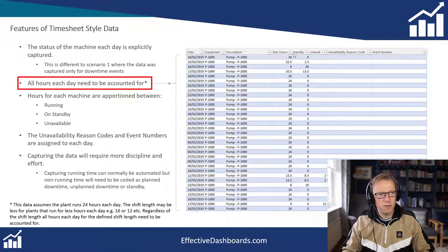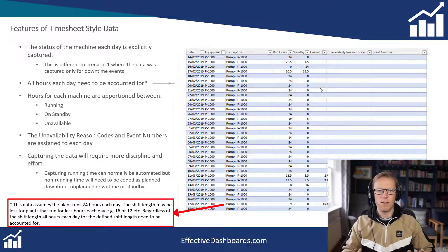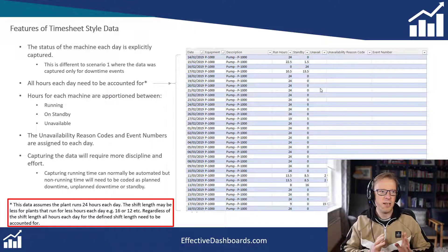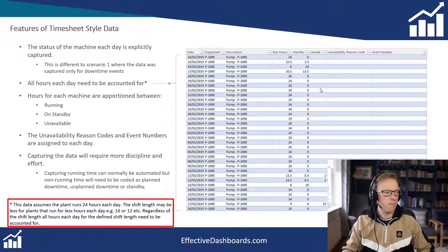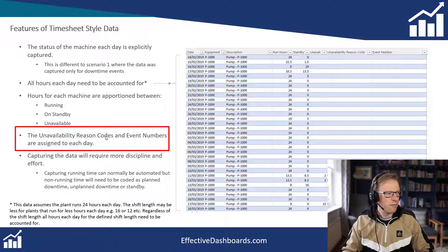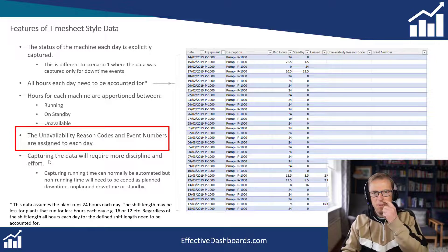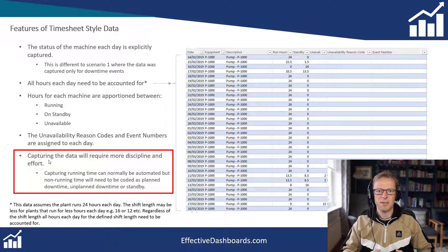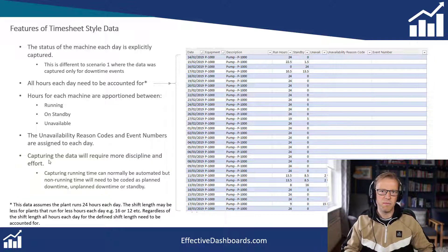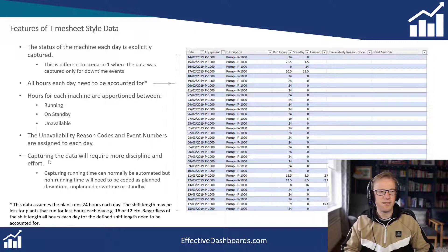All the hours need to be accounted for. In this example it's 24 hours, but it may be that your working duration is only 12 or 16 hours — whatever that is, you just need to make sure all of those hours are accounted for in either running, standby, or unavailable. Reason codes and numbers need to be added in. There will probably be a higher overhead in terms of capturing the data — it's easier to capture by exception, recording just the start and end date of a breakdown or planned downtime.